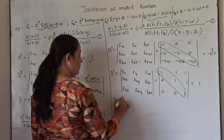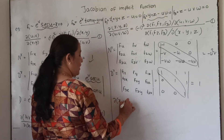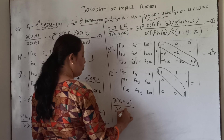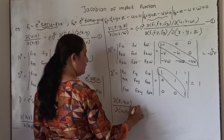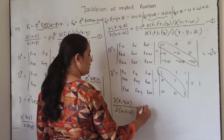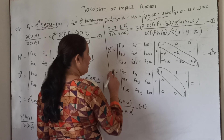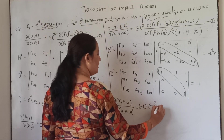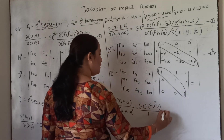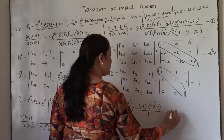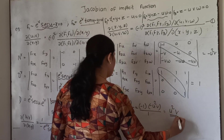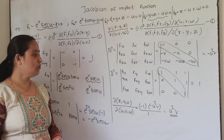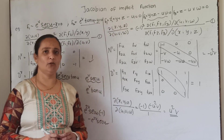Substituting into equation 1: minus 1 cubed is −1, times numerator −u²v, upon denominator 1, gives the Jacobian of xyz with respect to uvw equals u²v. Thank you.